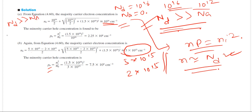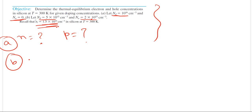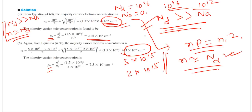For the first case, since Na equals zero, Nd is much larger than Na, so n equals Nd. Our Nd value was 10^16, so n equals 10^16, and applying the mass action law gives p. For the second case, we cannot apply this approximation because Na and Nd are almost in the same range — Na is 2×10^15 and Nd is 5×10^15. Applying the exact formula gives n = 3×10^15, not 5×10^15 as the approximation would give.